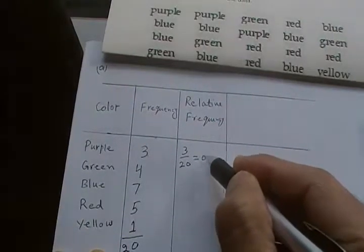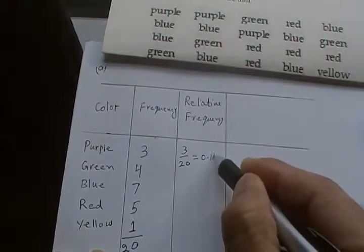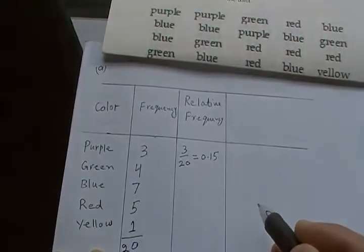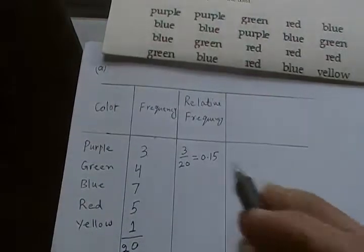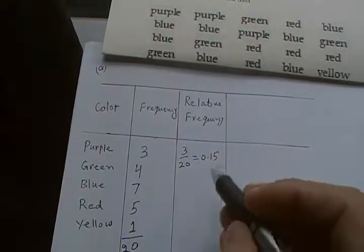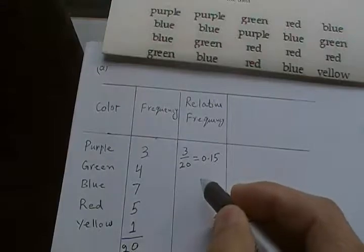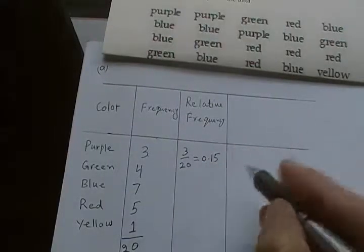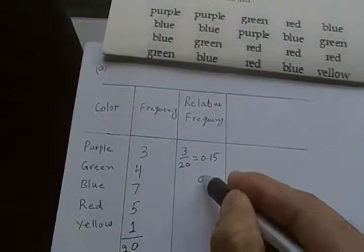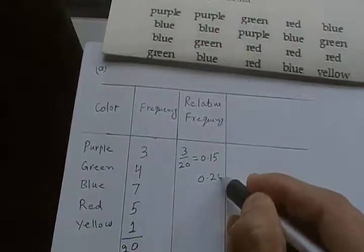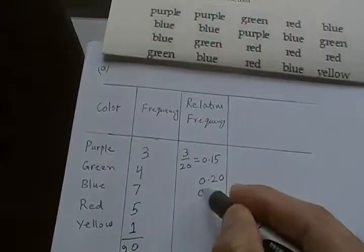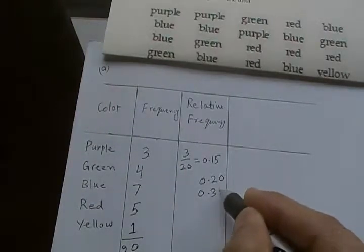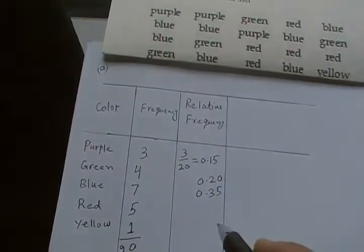Similarly, 4 out of 20, we just write down the decimal values - 4 out of 20 is 0.20, then 7 out of 20 is 0.35.